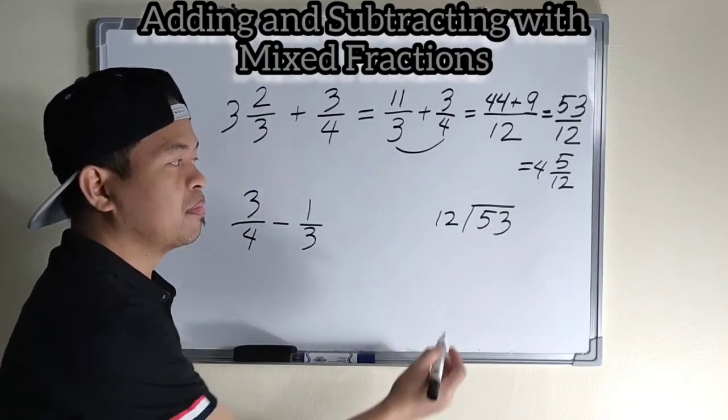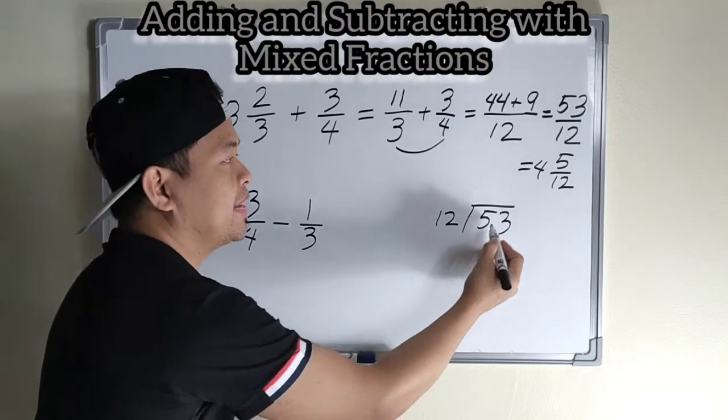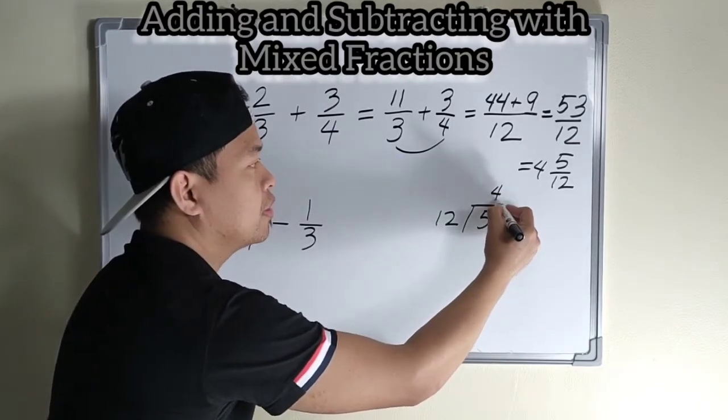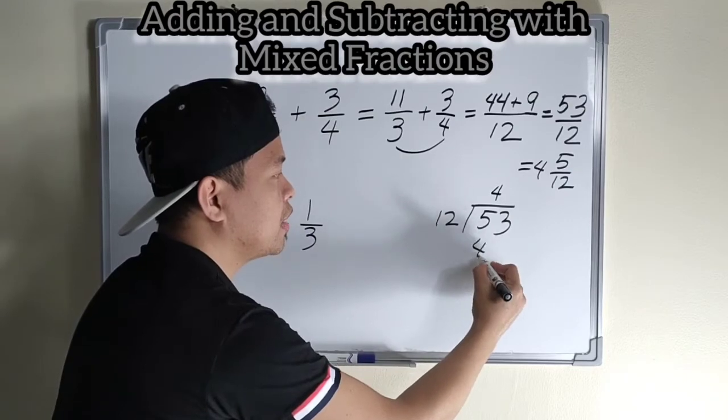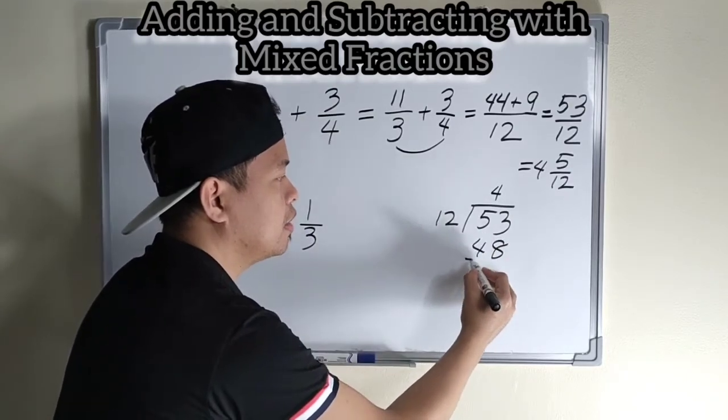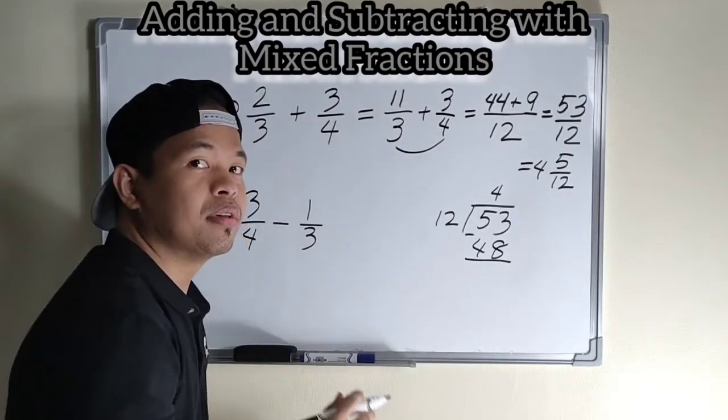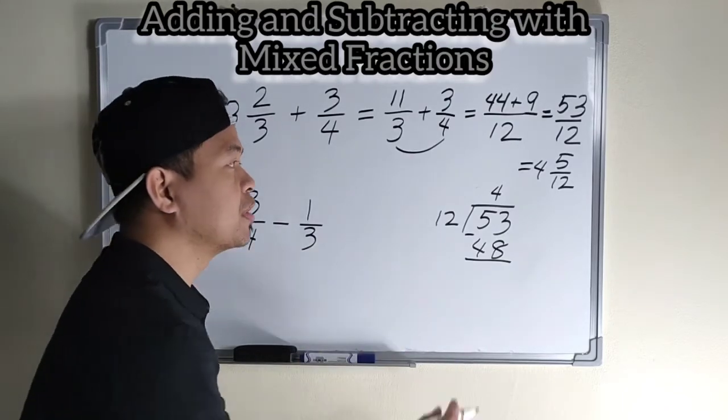Fifty-three divided by twelve is four. Four times twelve is forty-eight. Then, subtract.